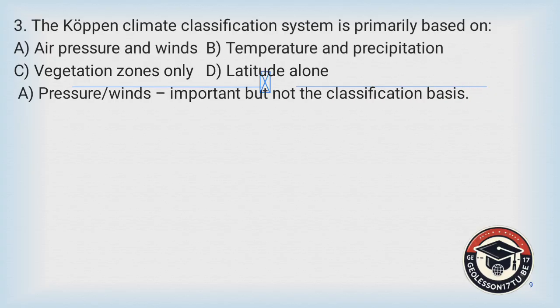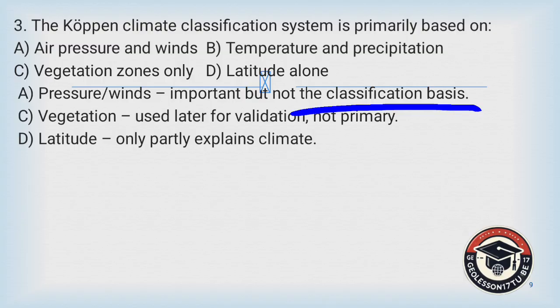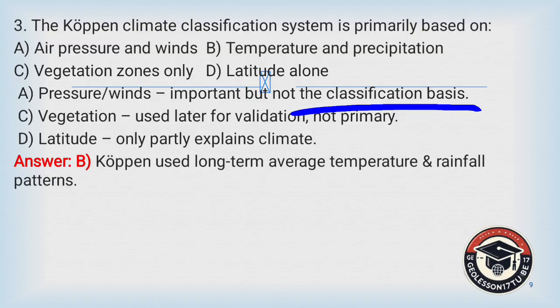Air pressure and wind are important in Koppen's classification but are not the classification base. Vegetation is used later for validation, so it is not the primary factor. Latitude explains only partial climate patterns. Koppen used long-term average temperature and rainfall patterns, so the correct answer is B.